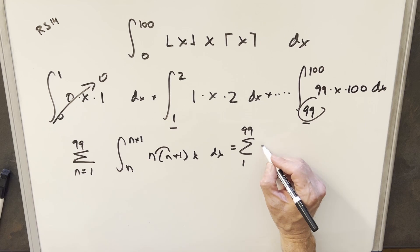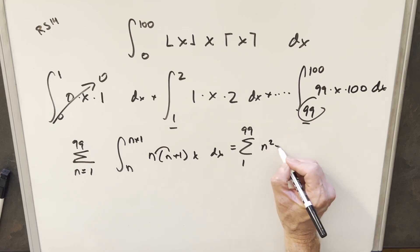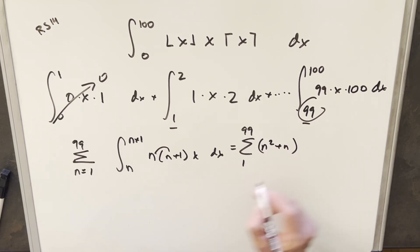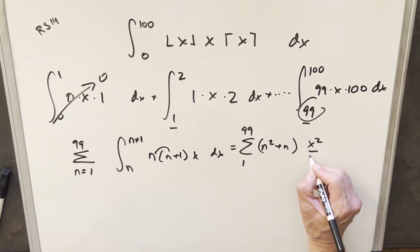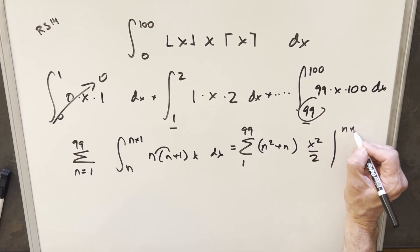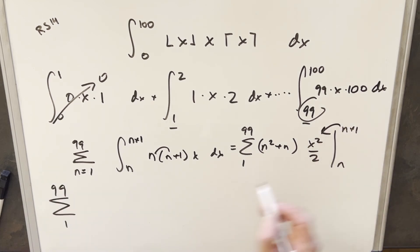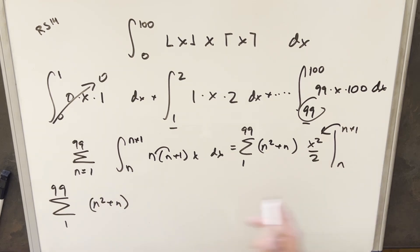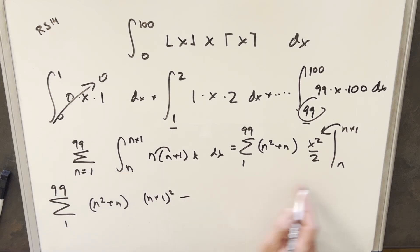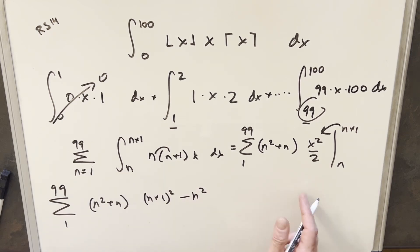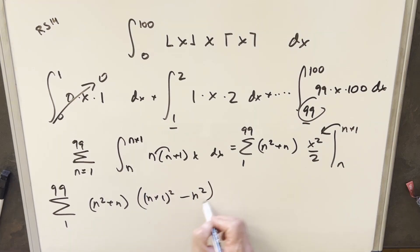I'm going to multiply the n and n plus 1 together first, writing the integrand as n squared plus n times x. Integrating this, we're going to have x squared over 2, and we just need to evaluate it from n to n plus 1. Bringing down our n squared plus n and plugging in n plus 1, we get n plus 1 squared; then plugging in n, we subtract n squared, bringing the one half out in front.